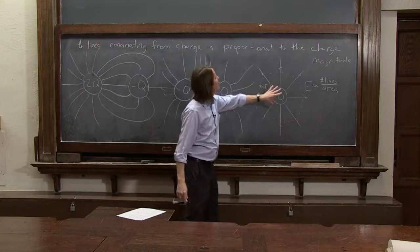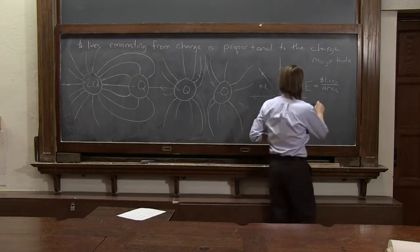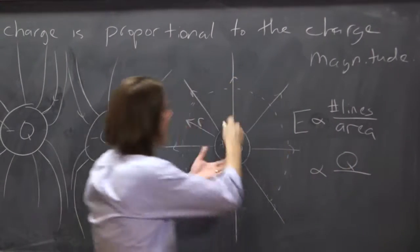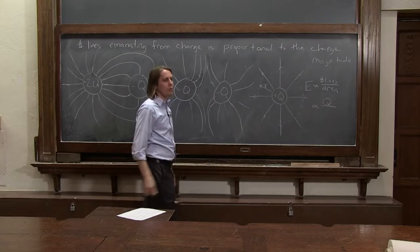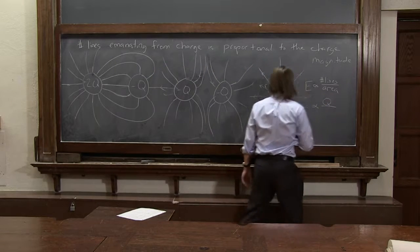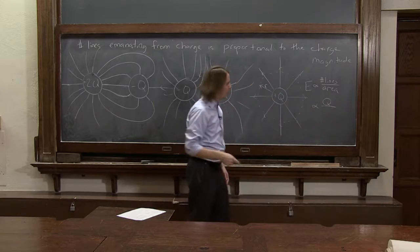Well, what do we say? The number of lines you put is proportional to the charge magnitude. So in that case, the E field is also proportional to Q. Here, I drew eight lines for Q. Had it been 2Q, I would have drawn 16 lines. So that's proportional to Q. And what is the area of a sphere? It's 4 pi r squared.